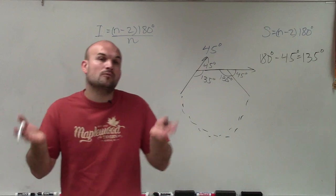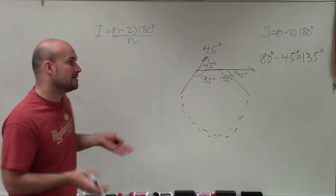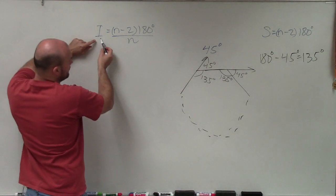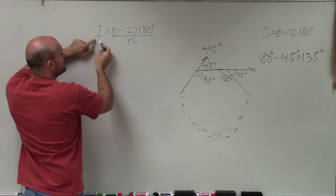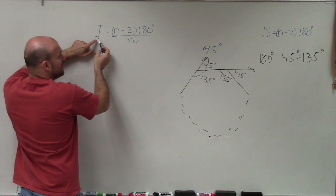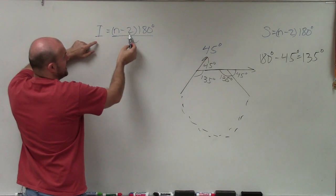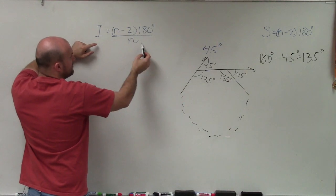But the thing is, we need to figure out, well, then what is the number of sides? So we go look to our formula. And the formula says, if I know the measure of one interior angle of a regular polygon is equal to the number of sides minus 2 times 180 divided by the number of sides.